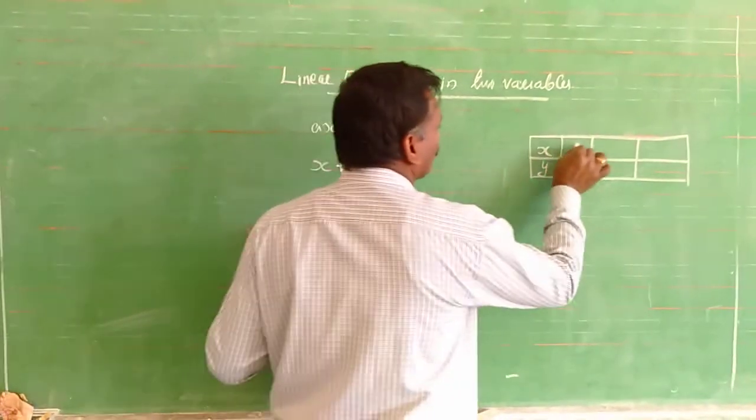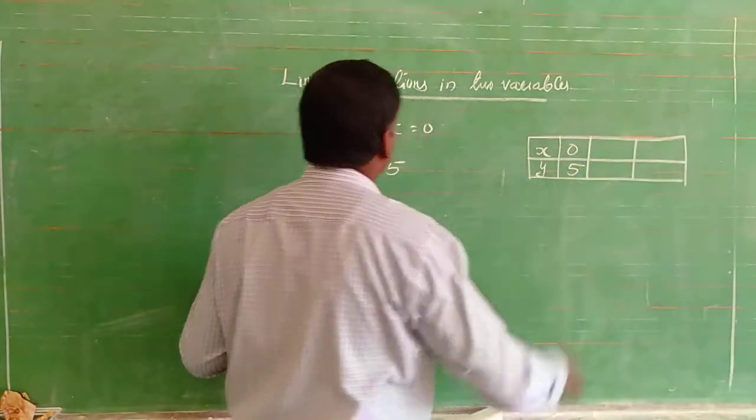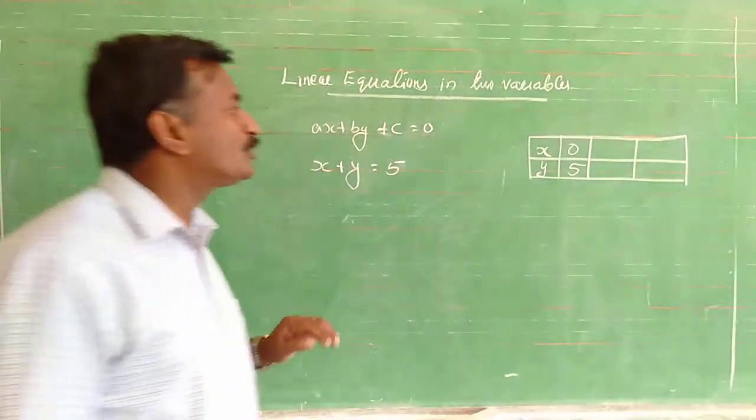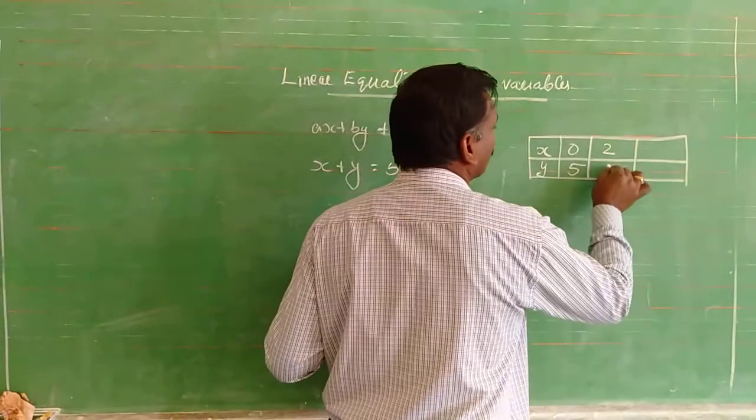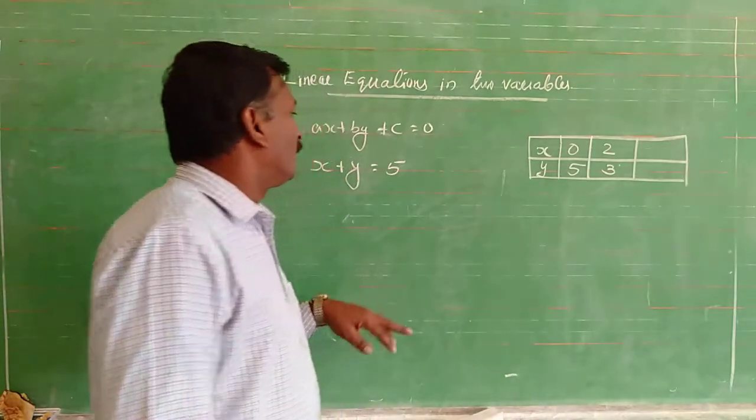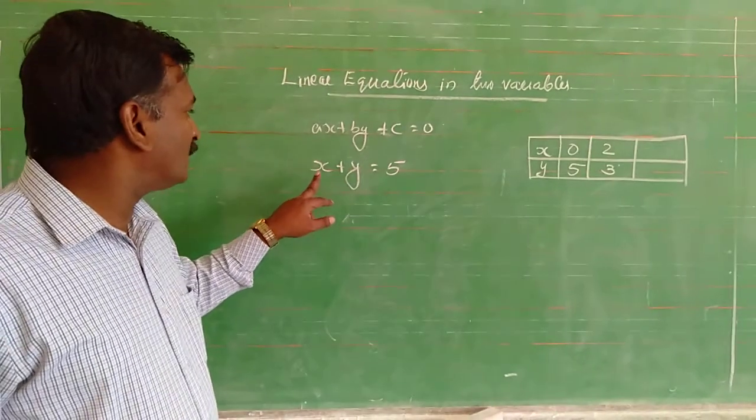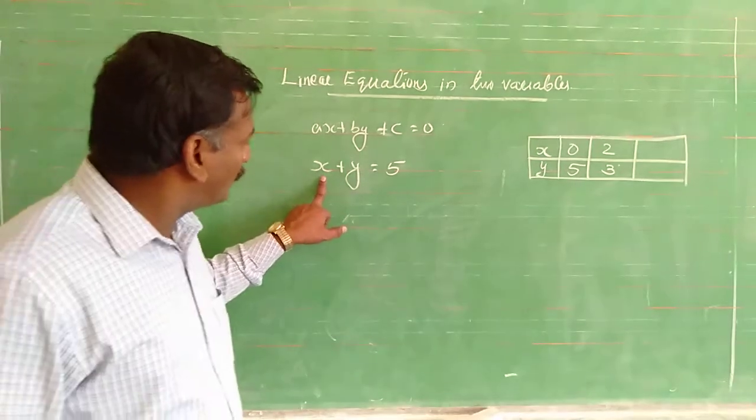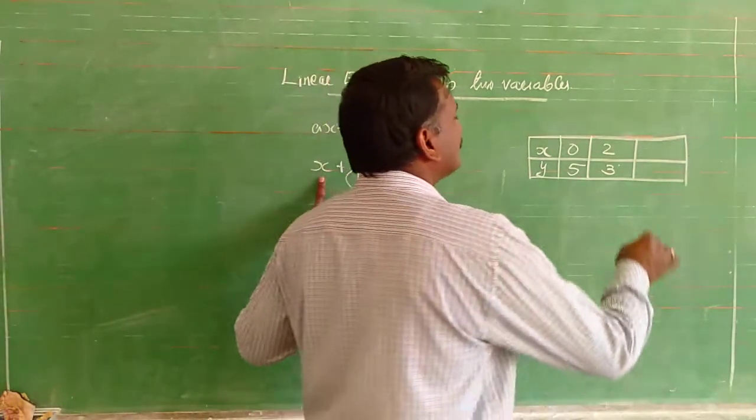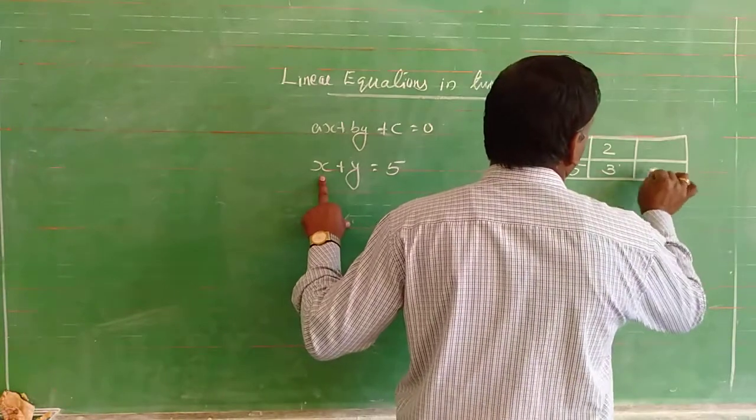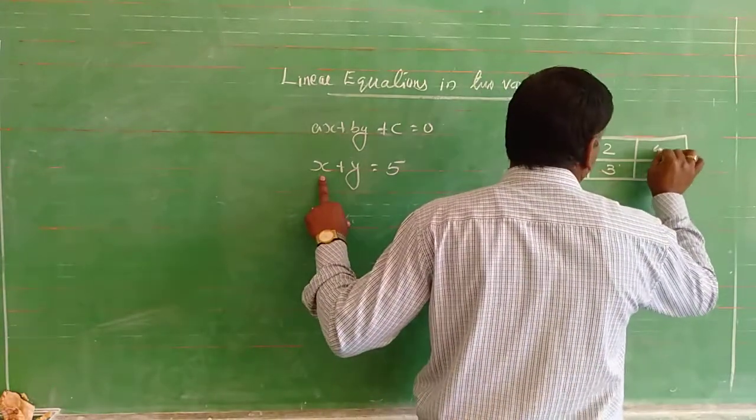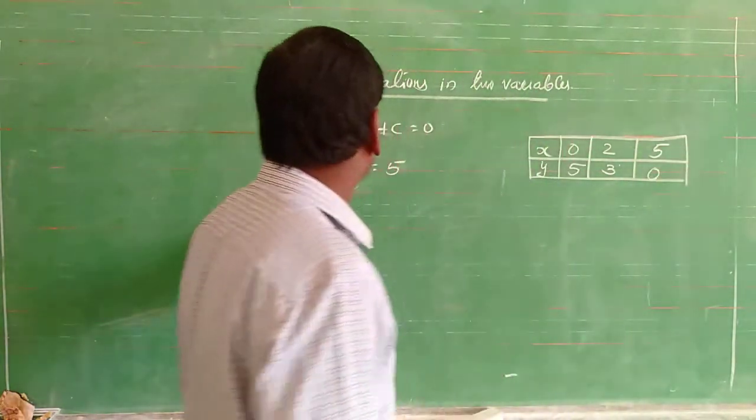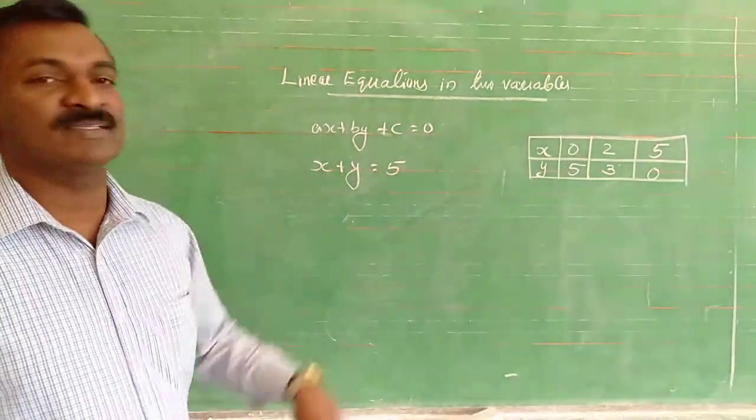When x is equal to zero, then y is equal to 5. When x is equal to 2, then y is equal to 3. When x is equal to 5, then y is equal to 0. So we can draw the graph.